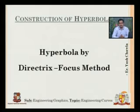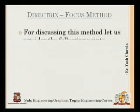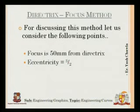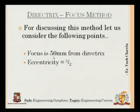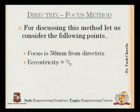For the hyperbola by directrix and focus method, the eccentricity is 3/2. I've taken the focus as 50 mm — the eccentricity is 3 and 2, totalling 5, so I'm taking 50 mm to make the explanation clearer. Both the eccentricity and the focus distance will be given in your question when you are asked to draw a hyperbola by the directrix and focus method.